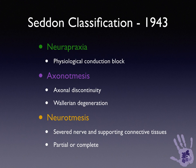Nerve Injury Classification. Herbert Seddon in 1943 used the terms neuropraxia, axonotmesis, and neurotmesis to describe nerve injuries. Neuropraxia was where there was a conduction block but the axons were in continuity. Axonotmesis meant that there was a disruption of the axons with subsequent Wallerian degeneration, and neurotmesis was severe disruption of the nerve plus connective tissue, which could be partial or complete.